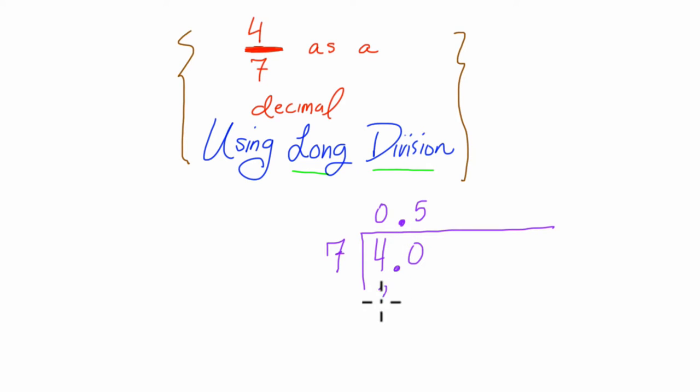7 times 5 is 35. And this is really, we're thinking of this as 40 minus 35, that's 5. And we carry a 0 over here.